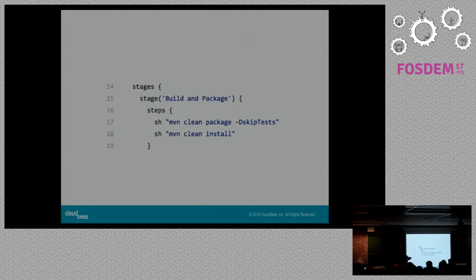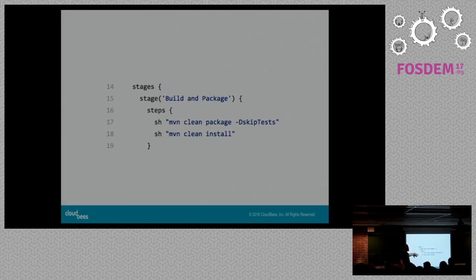The next key part — and really the bulk of declarative — is stages. You put all of your stages inside the stages block, with at least one and as many more as you want. Each stage takes a name, some optional configuration, and then a block of steps to execute. Each chunk of steps executes in that stage, and they'll show up in the Blue Ocean visualization so you can see how long each particular chunk took and what the results were. Organization is enforced by requiring that everything be in a stage.